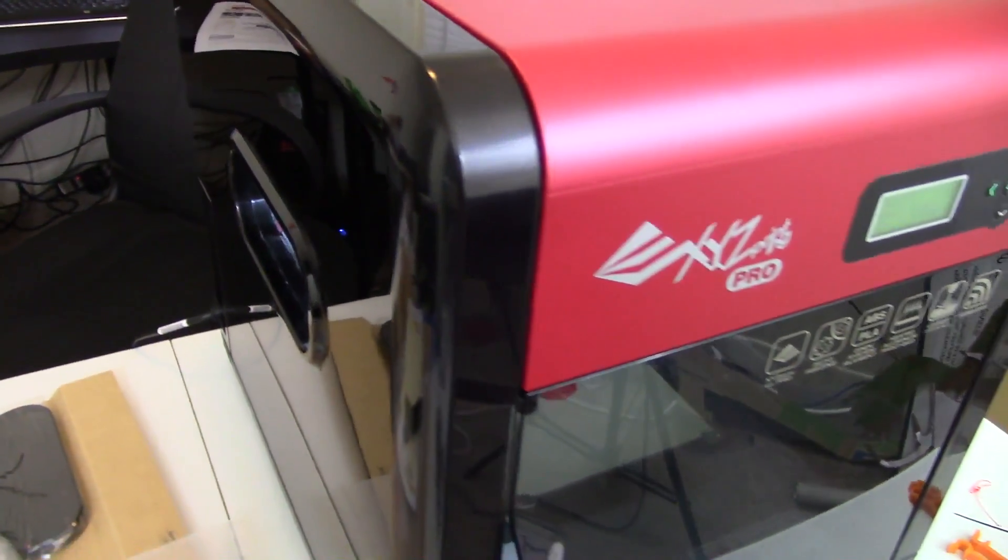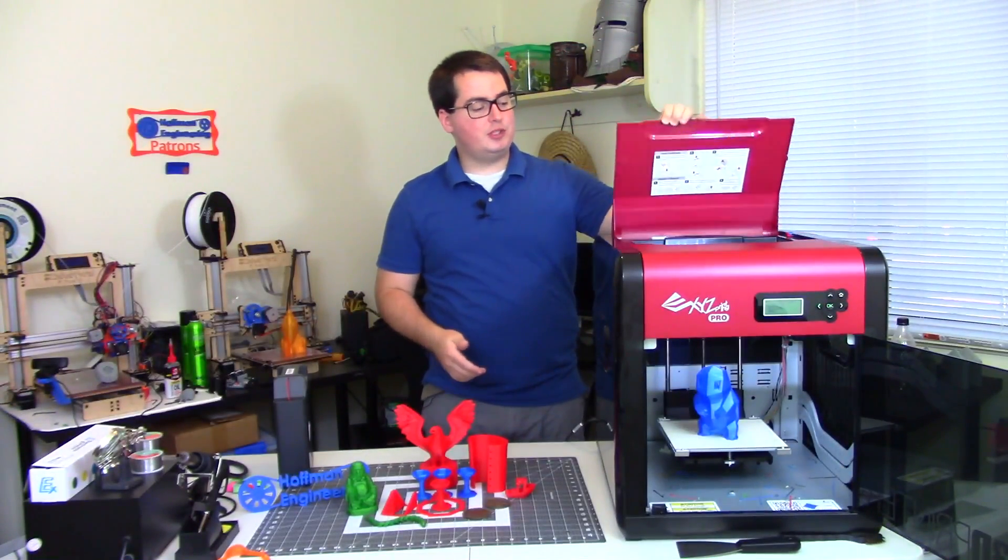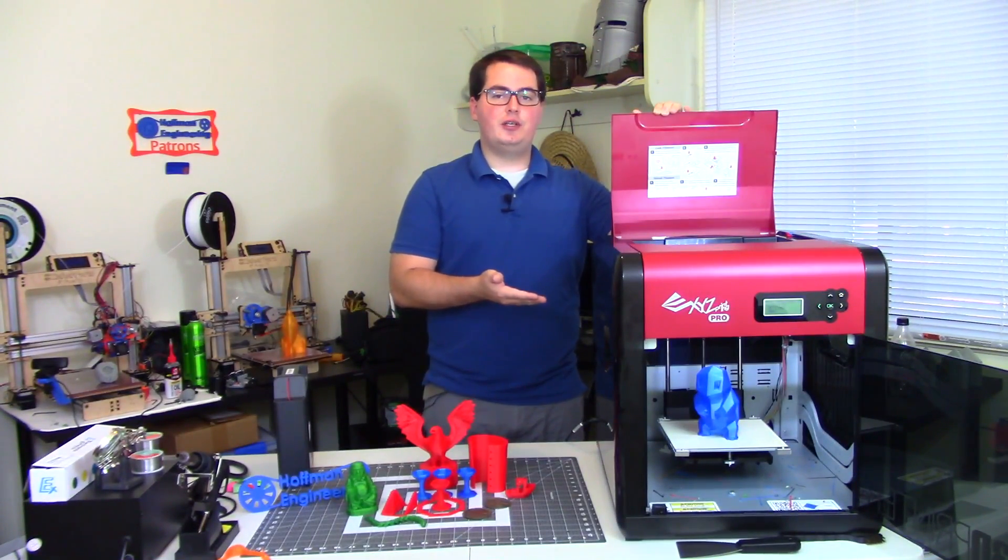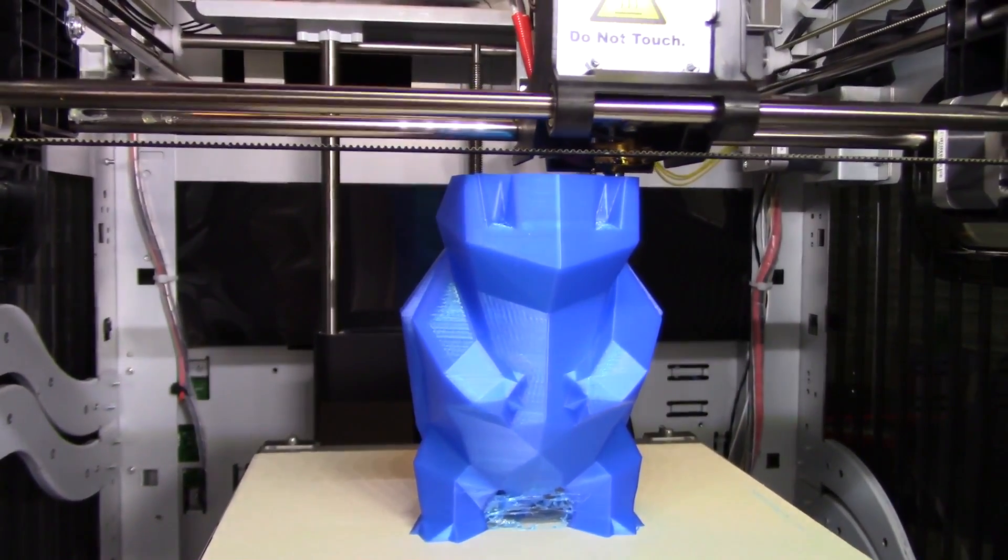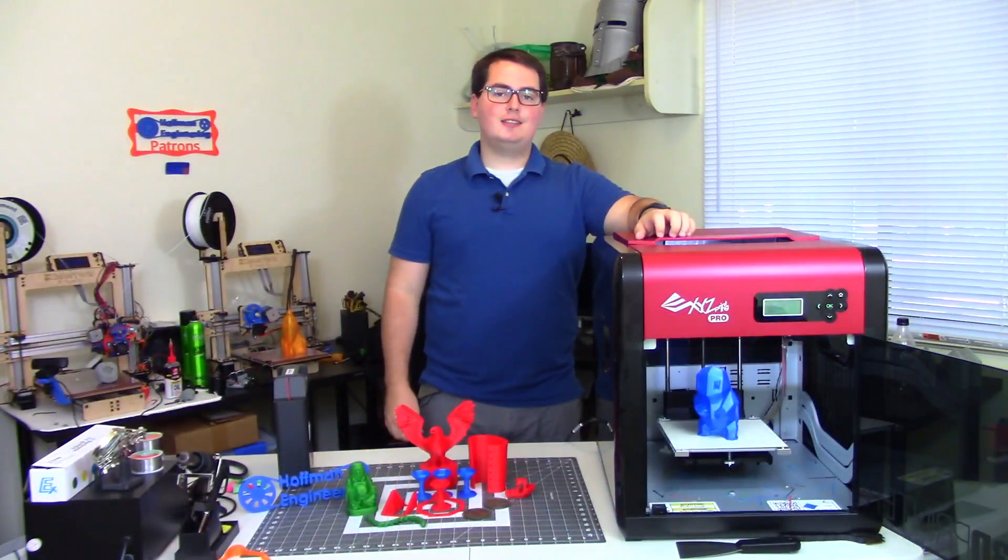The printer itself has a gorgeous red and black color scheme. It has both front and top panels which open up to give you access to the interior of the machine. The hot-end carriage is located on steel shafts which move in the X and the Y direction, and the heated bed moves up and down on the Z-axis.